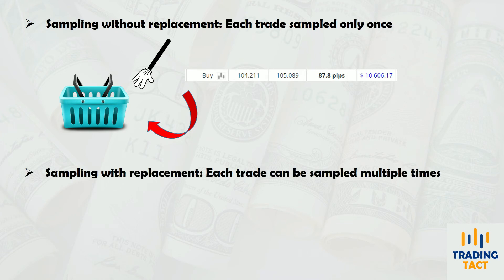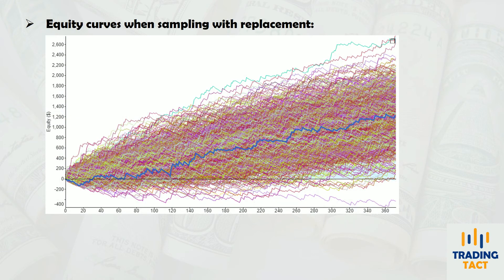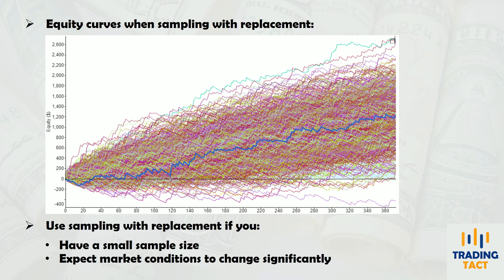With sampling with replacement, chances are each equity curve will have a different end point. Sampling with replacement is a good idea if you have a small backtest sample size, or you expect market conditions to change significantly in future. This particular backtest has 400 trades over 11 years, so I'll use sampling without replacement.